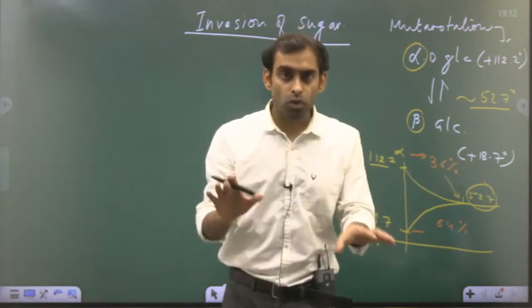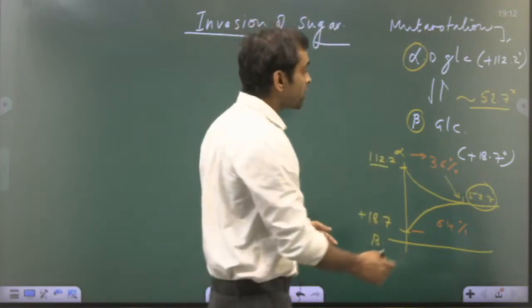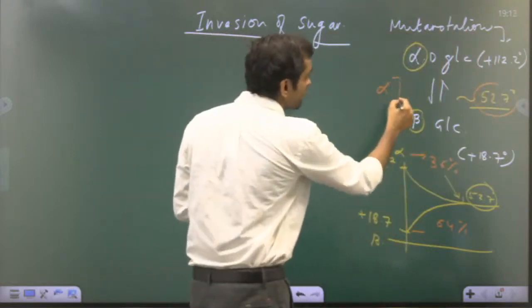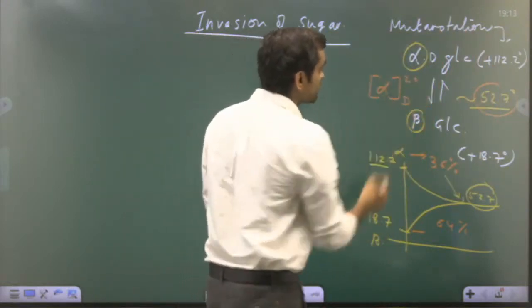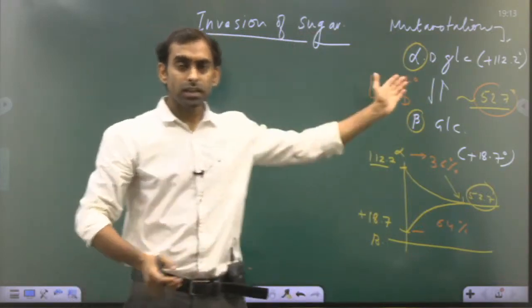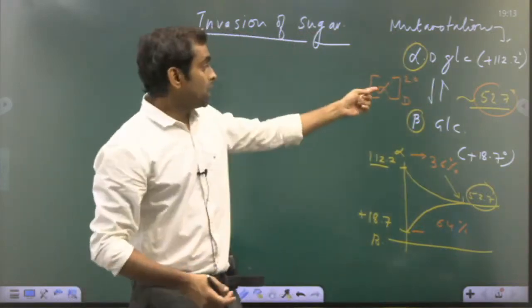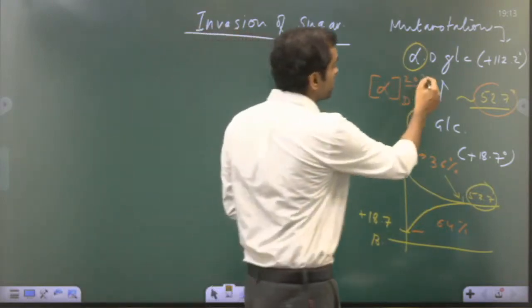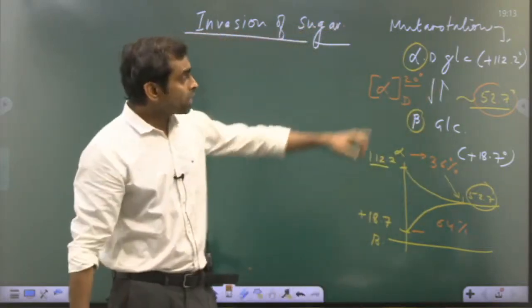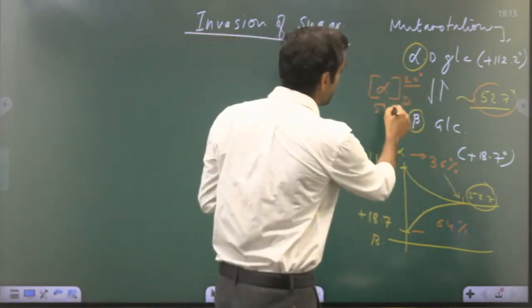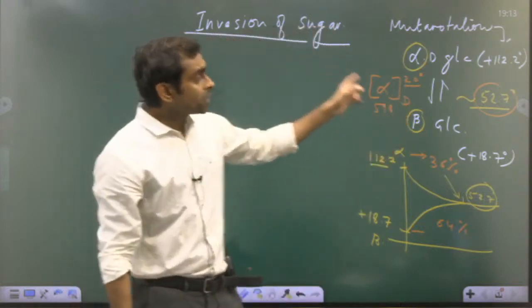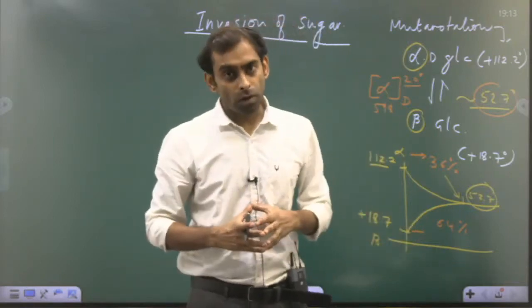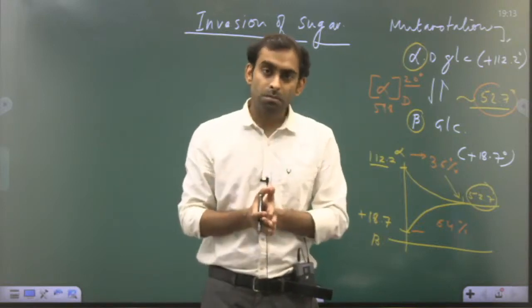Both anomers are present in a fixed proportion at equilibrium, and that is why the optical activity of glucose referred to in textbooks — called specific rotation, written as [α]²⁰_D — where D is the D-line of sodium vapor lamp at around 598 nanometers and 20 is 20 degrees Celsius. At 20°C, measuring optical activity at 598 nm gives a value of 52.7 degrees, due to the equilibrium mixture of alpha and beta glucose. This is known as mutarotation.